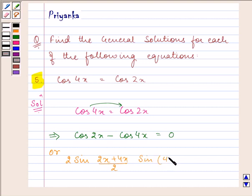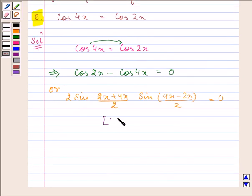Now here we have used the identity cos A minus cos B. Proceeding on, we have...